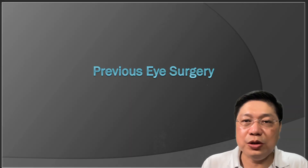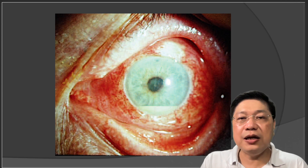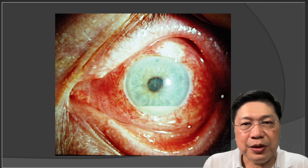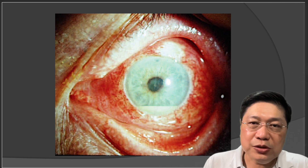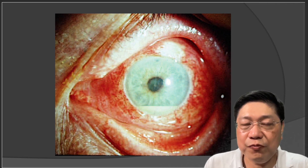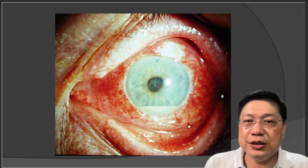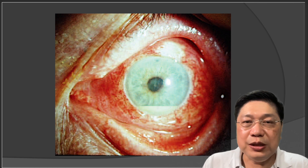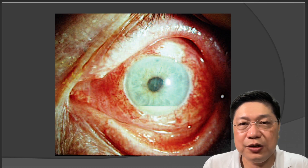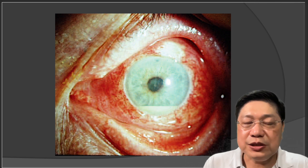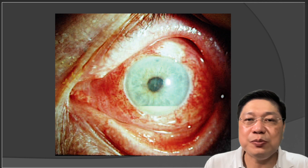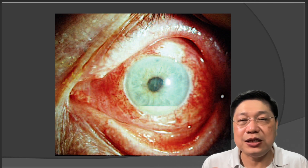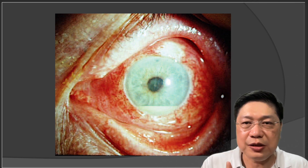Previous eye surgery would also cause redness. This is an infection in a patient's eye that just underwent surgery — this is called endophthalmitis. The conjunctiva is inflamed, the anterior chamber is inflamed, the front part of the eye is inflamed. You can see a hypopyon — the white fluid layer — and inside the anterior chamber, several floating fibrins. The eyeball itself is very painful. Endophthalmitis is an infection of the entire eye from front to back.